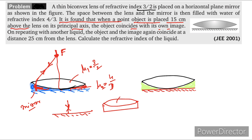So here there are two lenses: one is the biconvex lens with focal length f₁, and the other is the water layer acting as a plano-concave lens with focal length f₂. The combined focal length is given by 1/f = 1/f₁ + 1/f₂.